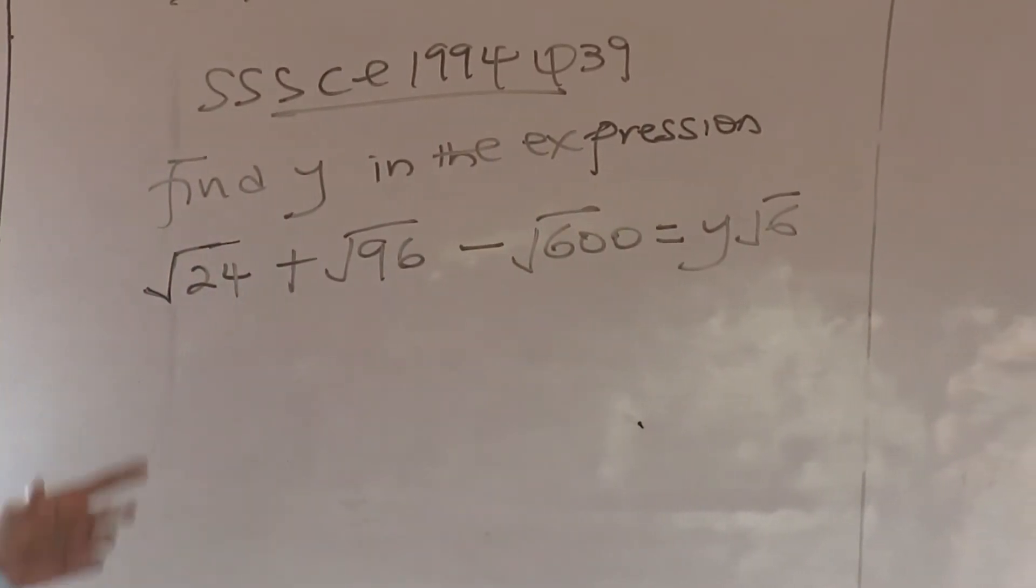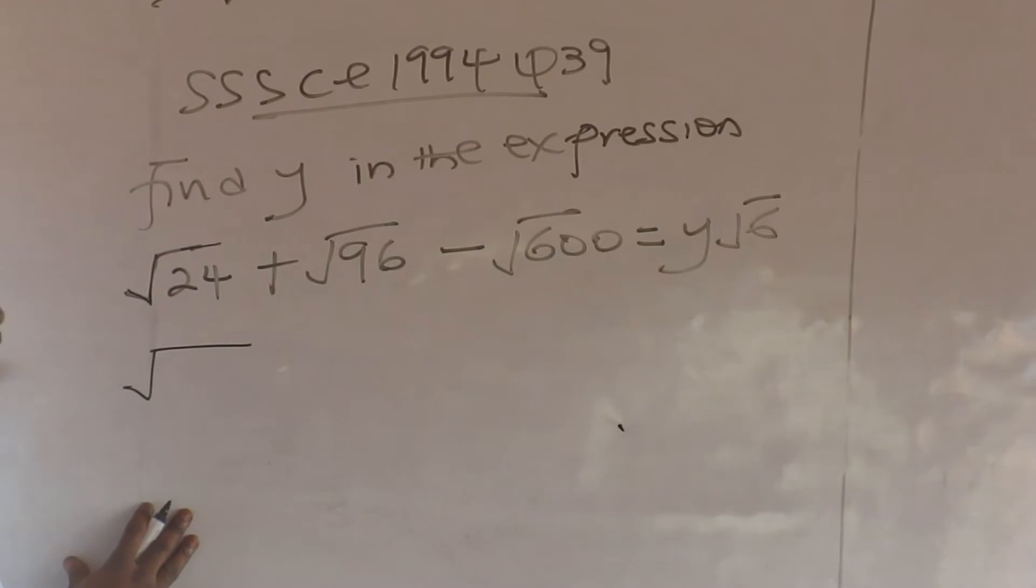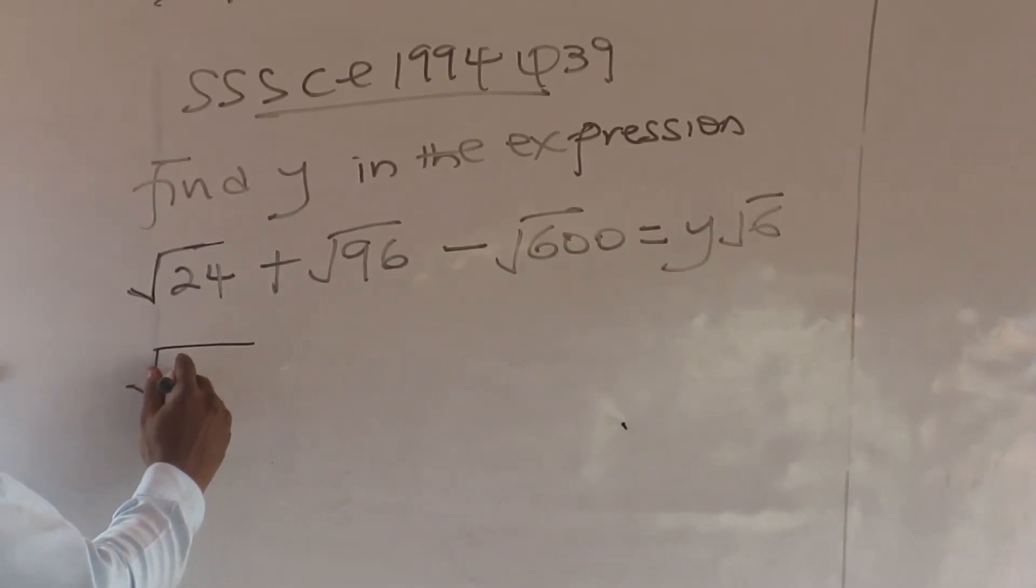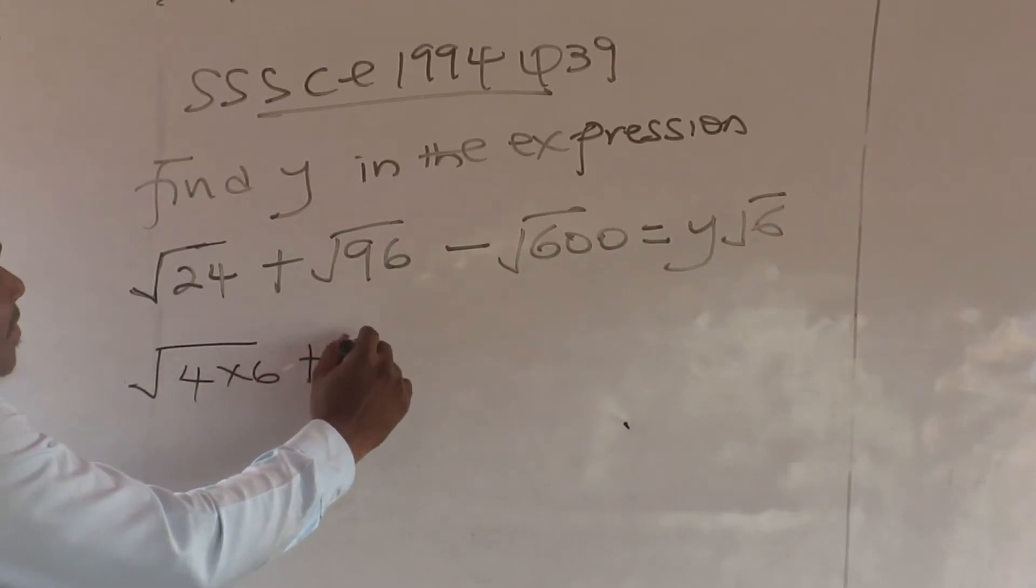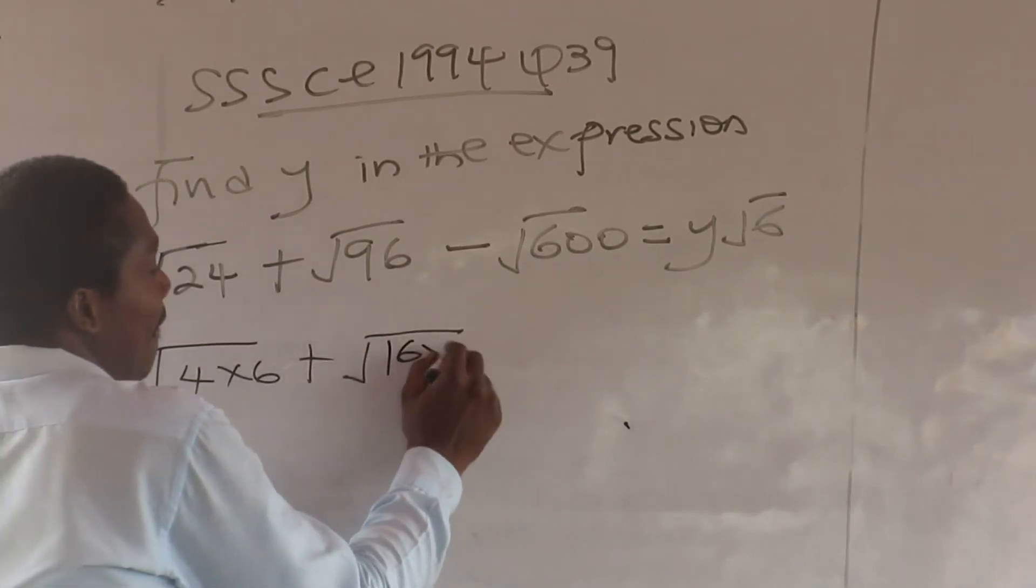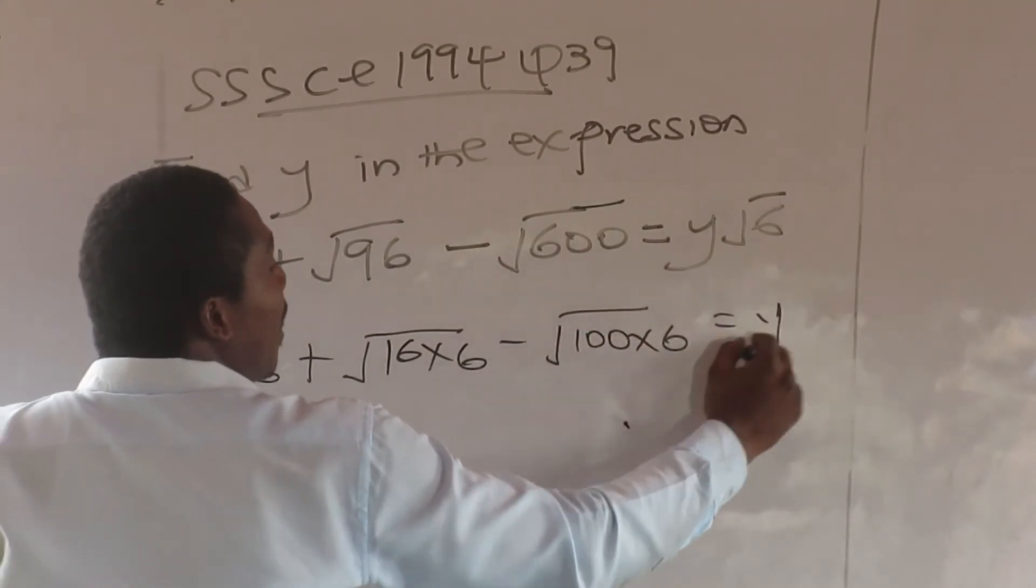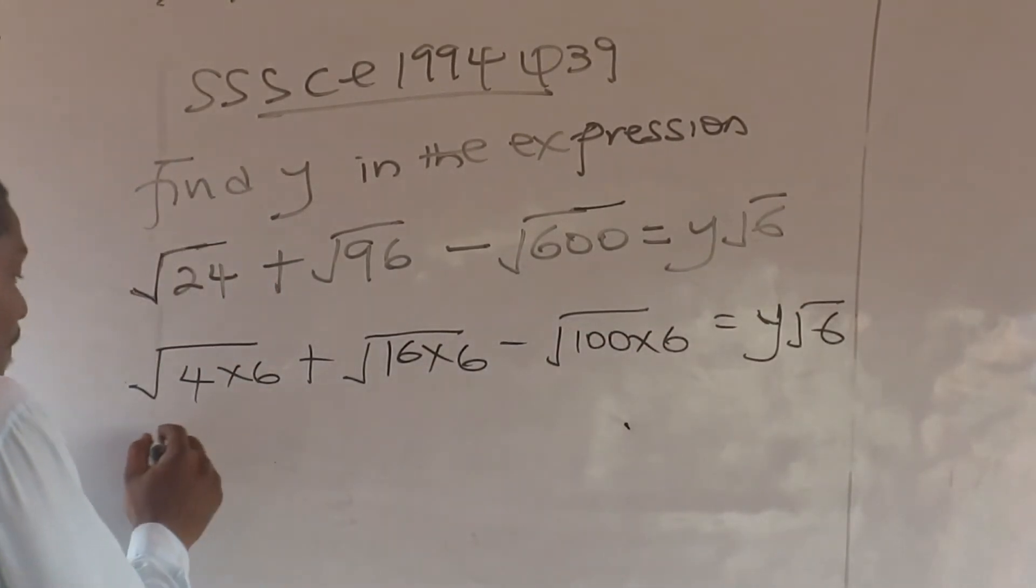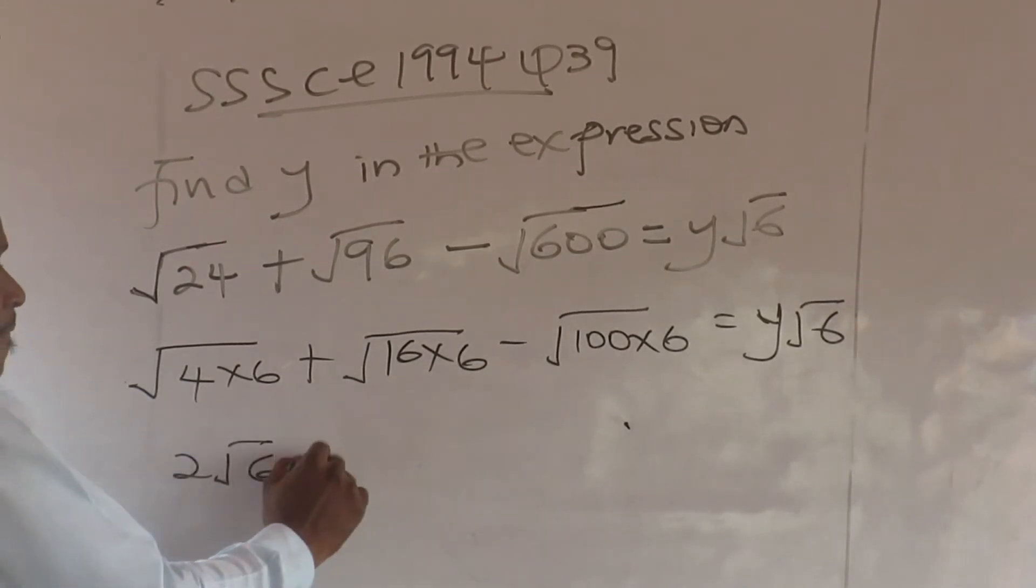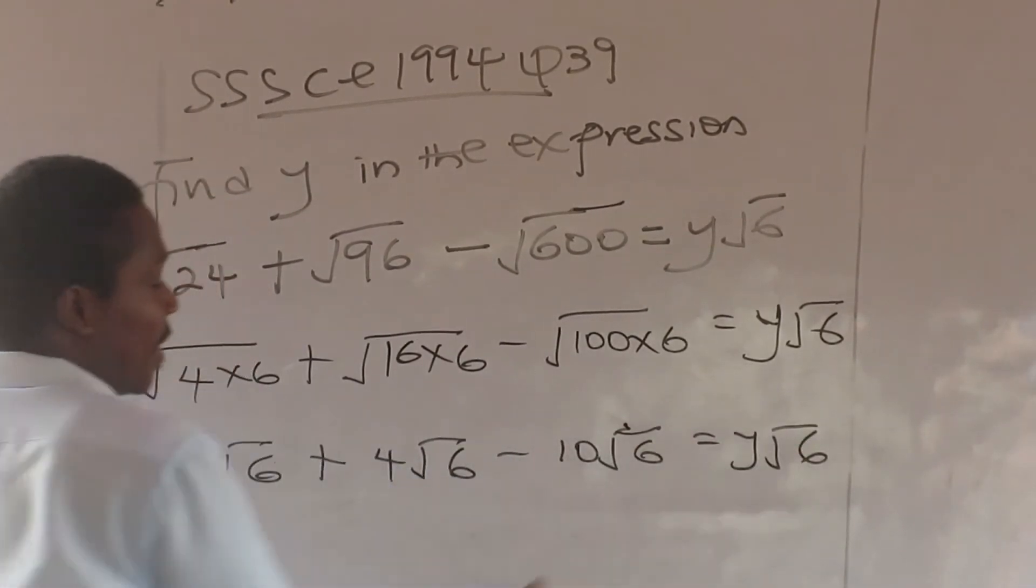So let's go. Here is a sample question. Now find y in the expression. So we go for our factors. So 24, what are the factors to be used? Now 96. Let's get the factors. Now 600. That is 100 by 6. And then it's y root 6. So you are going to get 2 root 6 plus 4 root 6 and it's 10 root 6, because y root 6, as you can see.